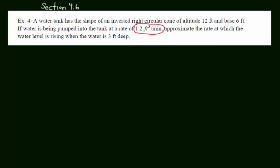Follow along: A water tank has the shape of an inverted right circular cone of altitude 12 feet and base 6 feet. Water is being pumped into the tank at a rate of 1.2 feet cubed per minute. Approximate the rate at which the water level is rising when the water is 3 feet deep.